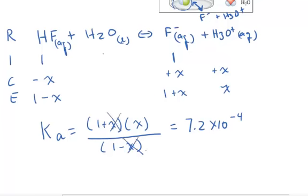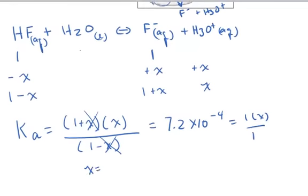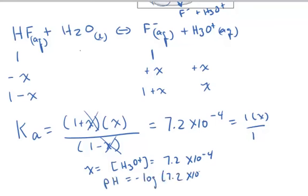When X is negligible compared to one molar, the expression simplifies to Ka equals one times X divided by one, so X simply equals Ka, which is 7.2 times 10 to the minus 4. Therefore the hydronium ion concentration at equilibrium equals 7.2 times 10 to the minus 4 molar. The pH is the negative log of 7.2 times 10 to the minus 4, which equals 3.14.